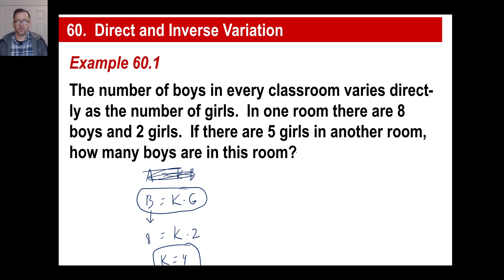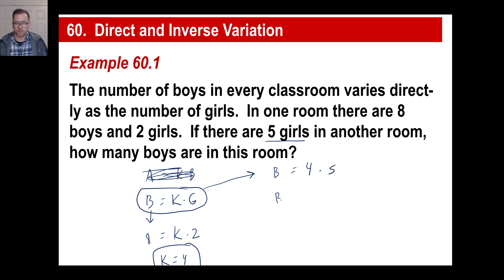Now we use the equation with K equals 4. There are 5 girls in the other room, so boys equals 4 times 5, which is 20. You probably knew the answer was 20 anyway — this is just the formal method of solving it.